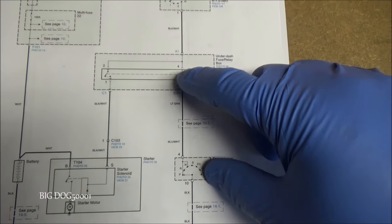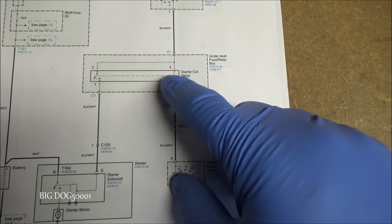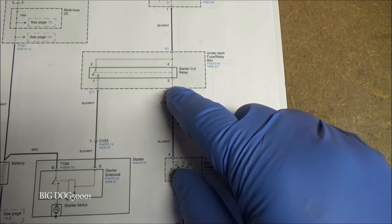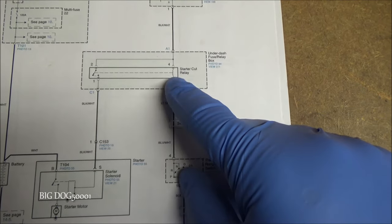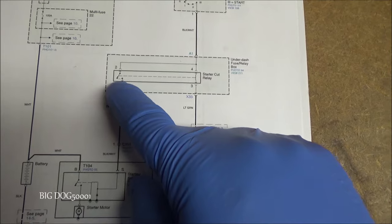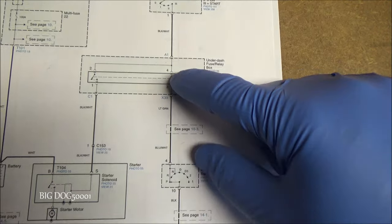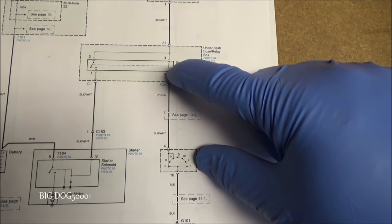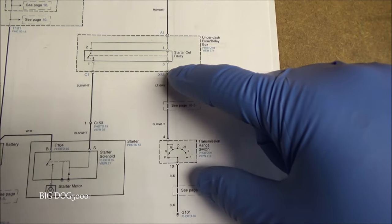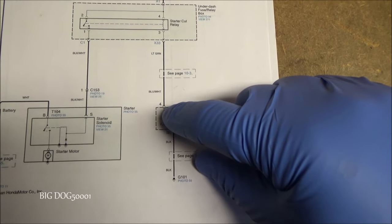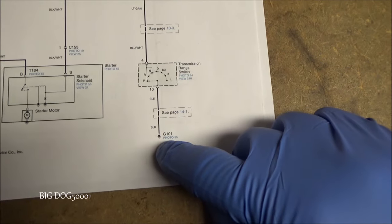The way relays work, we're going to have a control side, and that's going to be this side here represented by this squiggly line, that's a coil of wire. And then we have our load side here, and that's going to be doing all the work. So when power comes in, it's going to come up to this coil of wire, and in order to energize this coil of wire, we're going to need a ground. This wire is coming down, going through our transmission switch to a ground right there, this G101.